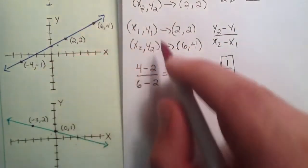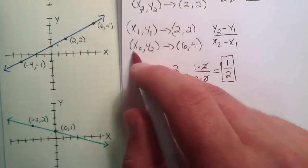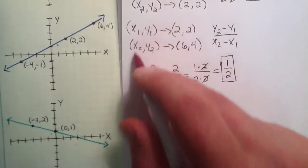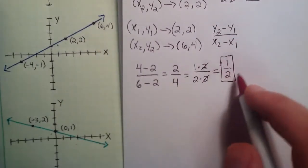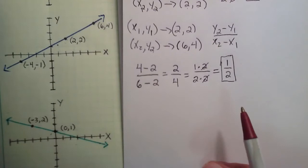So any two points you choose on the line, label them x1, y1, x2, y2 to your liking, plug them into this equation, and you will end up with the same slope, no matter which two points on the line you choose.